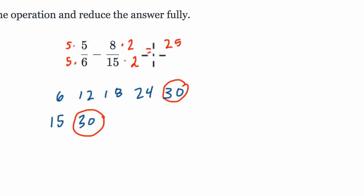5 times 5 is 25, 5 times 6 is 30, 8 times 2 is 16, and 15 times 2 is 30.